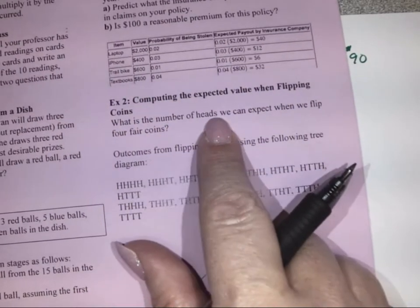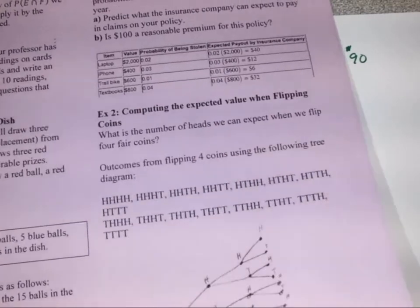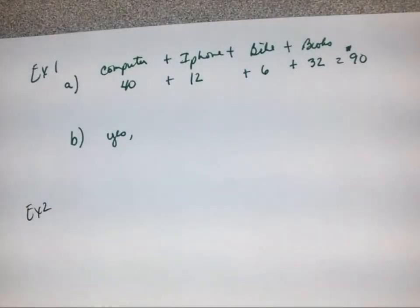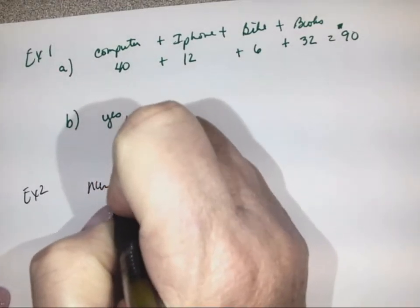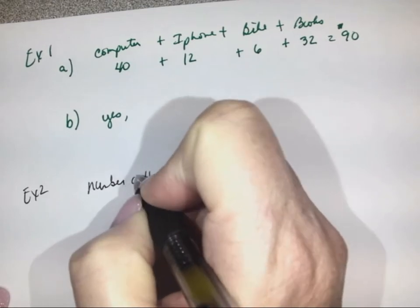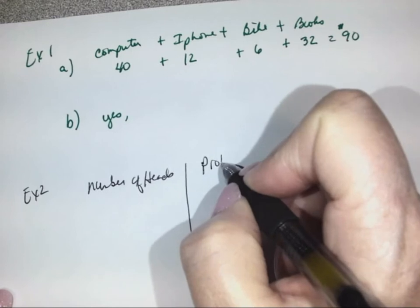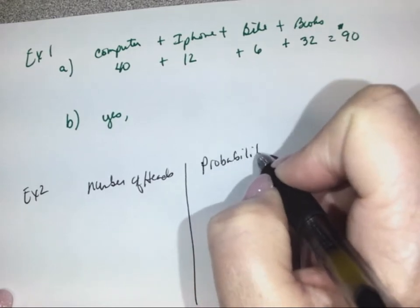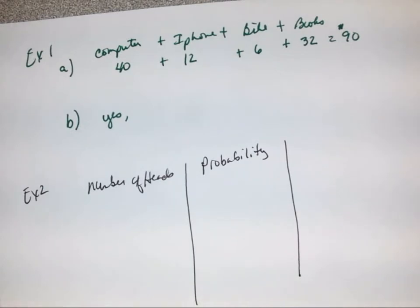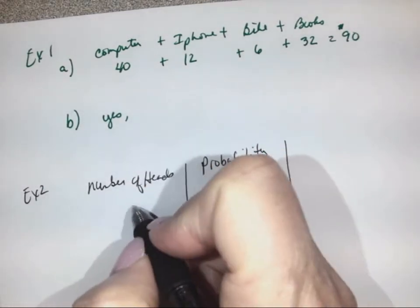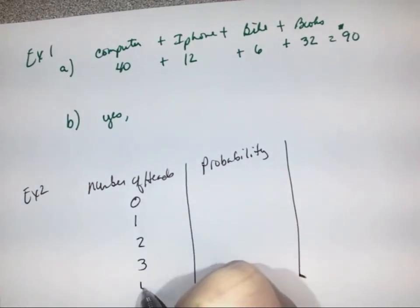We want to know the number of heads we can expect when we flip four fair coins. We'll make a chart showing the number of heads — zero, one, two, three, or four — and then the corresponding probability for each.